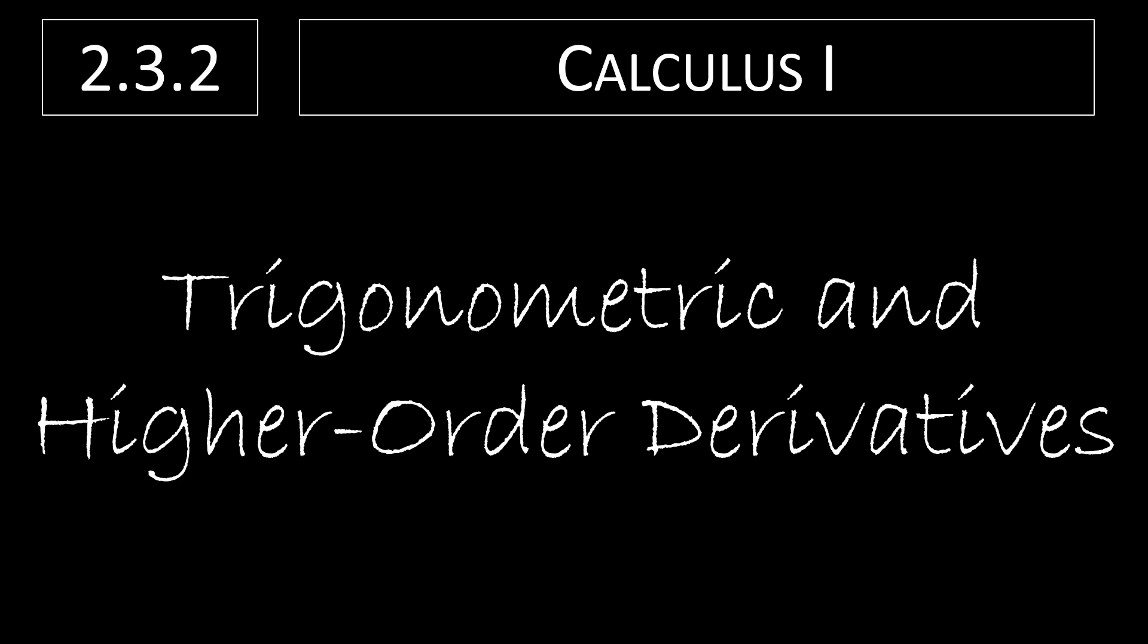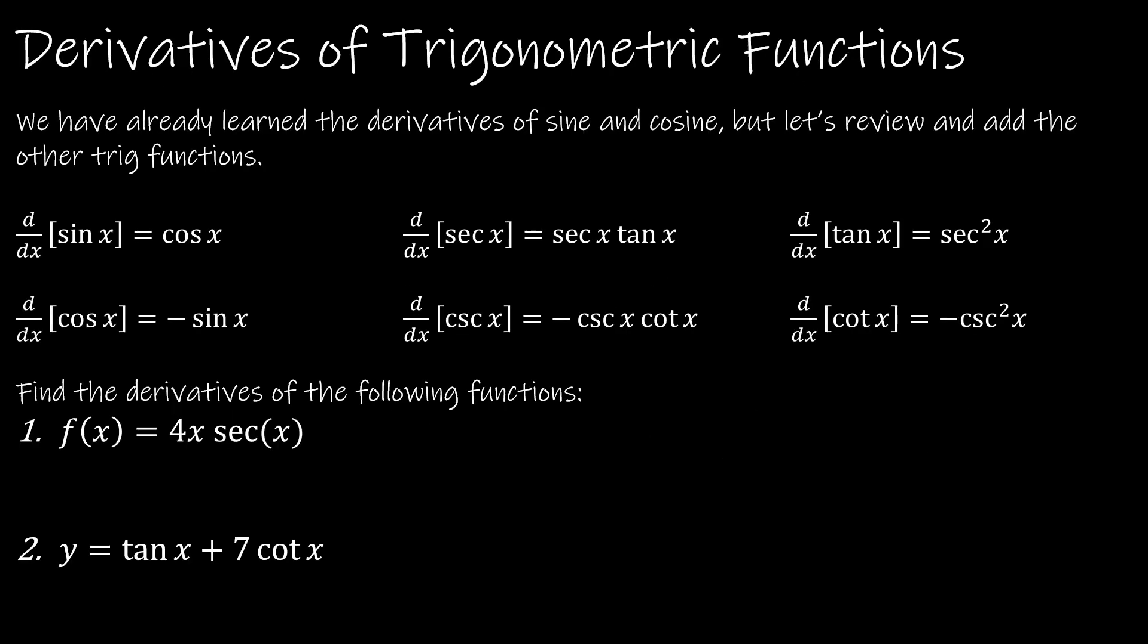We're going to finish up section 2.3 by taking a look at trigonometric and higher order derivatives. We've already learned the derivatives of sine and cosine. Remember when I said when you take the derivative of a co, it's going to be negative. So the derivative of sine is cosine, the derivative of cosine is negative sine.